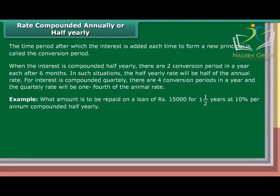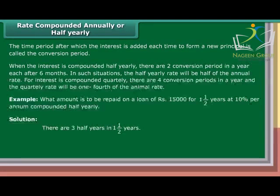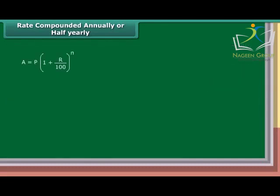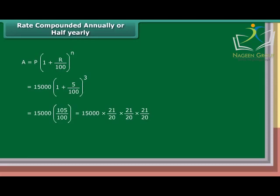Example: What amount is to be repaid on a loan of Rs. 15,000 in one and a half years at 10% per annum compounded half yearly? Solution: There are three half years in one and a half years, so compounding is done three times. Rate of interest equals half of 10%, which is 5% half yearly. A equals P into (1 plus R upon 100) raised to the power N, which equals 15,000 into (1 plus 5 upon 100) raised to the power 3, equals 15,000 into (21 upon 20) cubed, which equals Rs. 17,364.37.